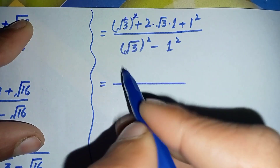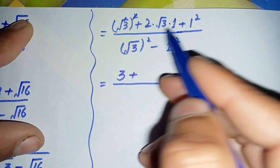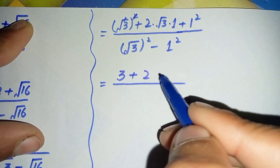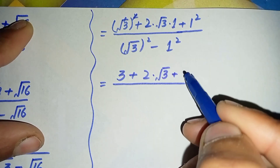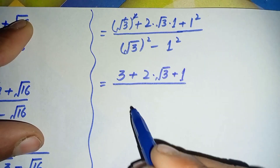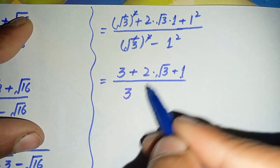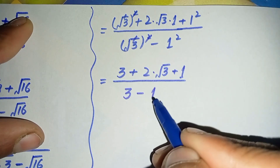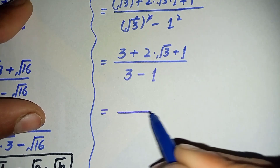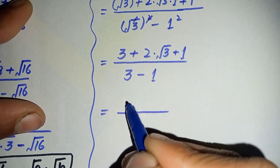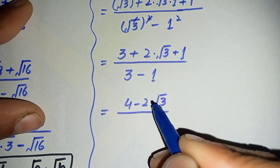Simplifying: the square and square root cancel, leaving 3; 2 times square root of 3 times 1 gives 2 square root of 3; and 1 squared is 1. In the denominator the square and square root cancel leaving 3, minus 1 squared which is 1. So it becomes 3 plus 1 plus 2 square root of 3, divided by 3 minus 1, which is 4 plus 2 square root of 3, divided by 2.